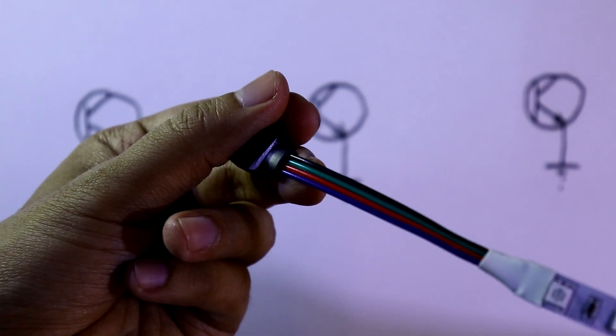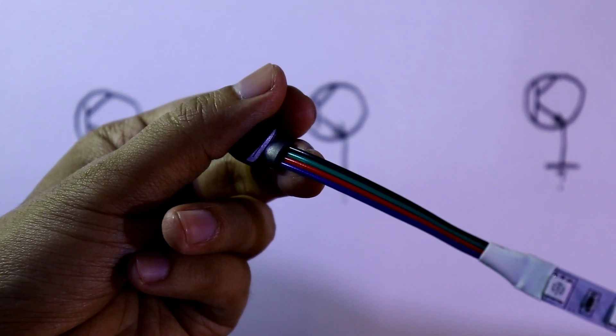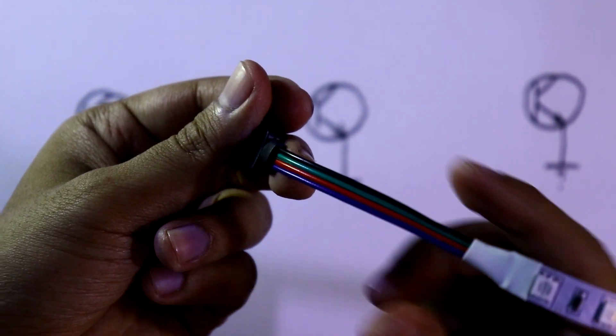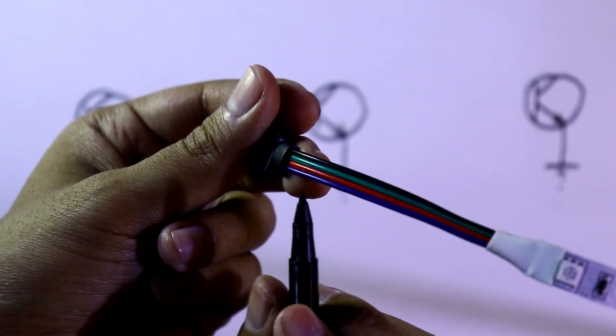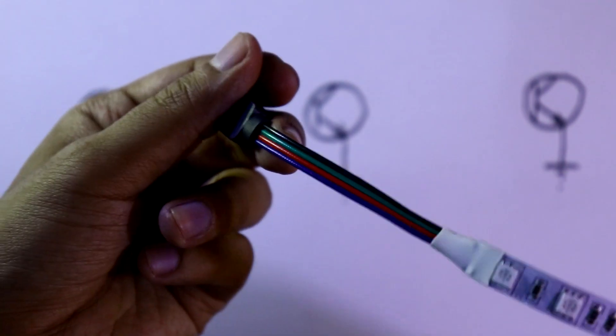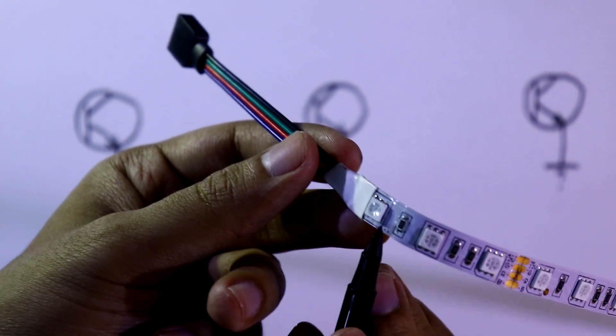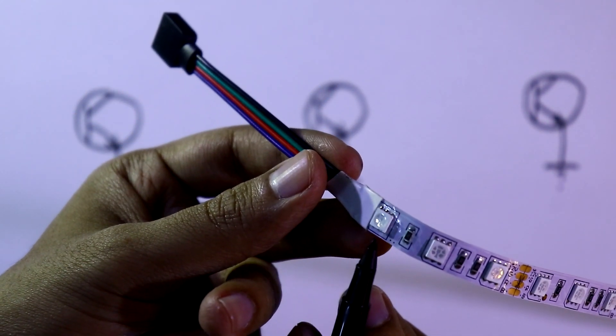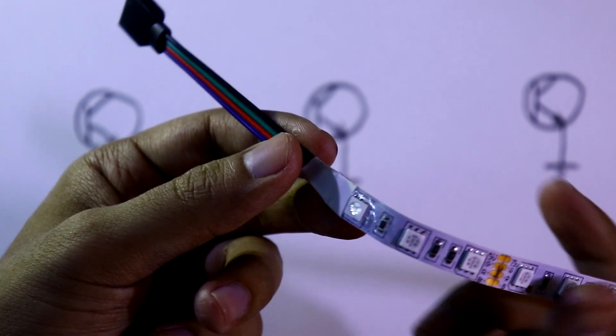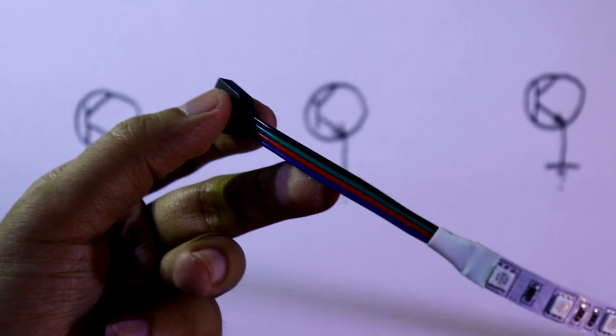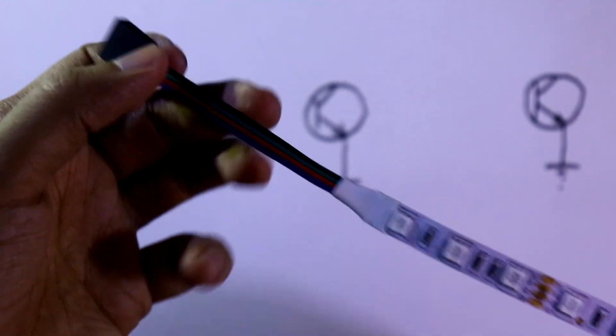It has four pins: black and RGB. Black is the positive pin, and all three other pins are negative, connected to the red, green, and blue pins of the LED. This black pin will be connected to 12 volt because it is a 12 volt RGB LED strip.